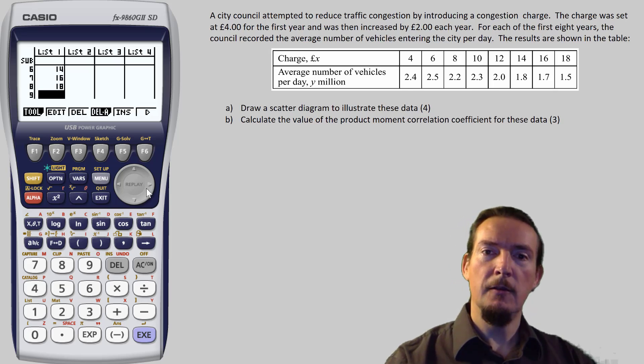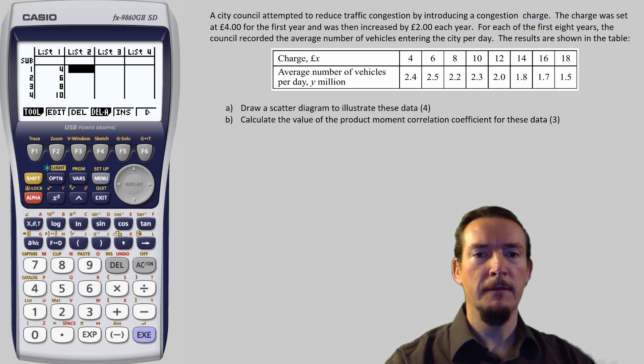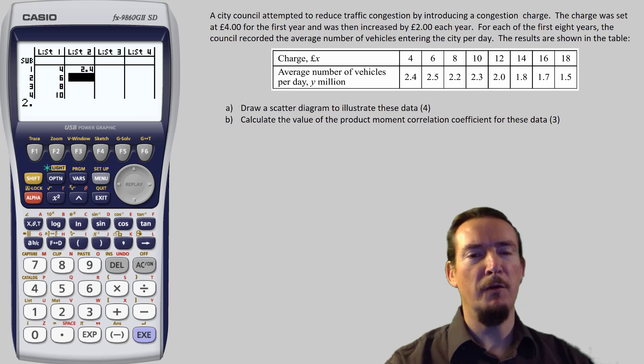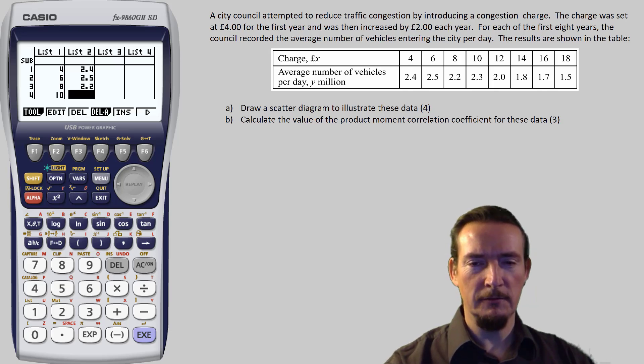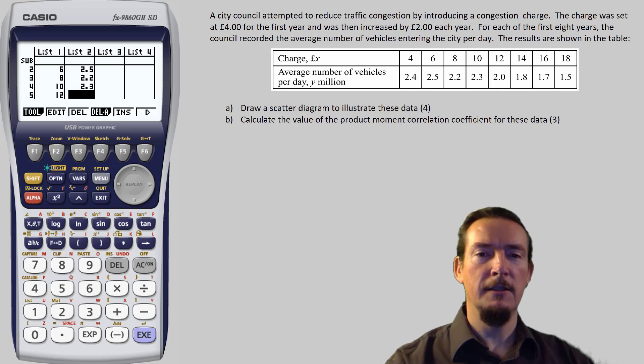Then we tap right on the arrow for list 2, and we enter the next set of values. 2.4, 2.5, 2.2, 2.3, 2.0, 1.8, 1.7, and 1.5. Done.